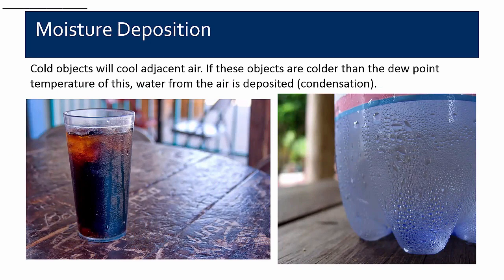When air comes in contact with a cold surface, the air adjacent to that surface cools down. If that surface is below the dew point temperature of the air, the air adjacent to it will deposit its moisture on that cold surface because it can no longer hold it. That's essentially what happens with condensation — like when a glass of Coke forms condensation because the air next to it has been lowered below its dew point temperature due to the cold surface.